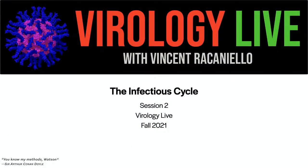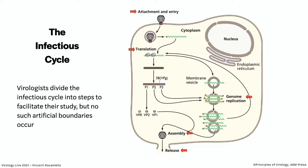The infectious cycle — what is it? It is what virologists like myself and many others divide the whole cycle of reproduction in a cell into steps to facilitate how we study them. The infectious cycle is everything that happens from the moment a virus particle attaches to the cell surface, goes into the cell, goes through all the steps needed to make new virus particles, and then the particles are released. Sometimes I will call it the reproduction cycle. I will use the definitions interchangeably.